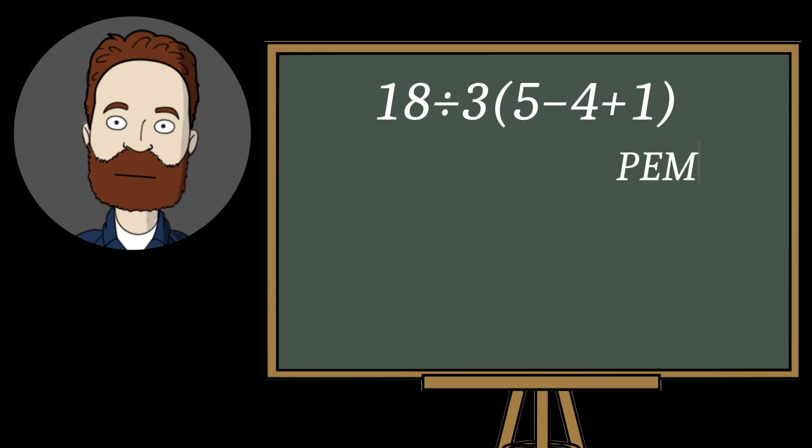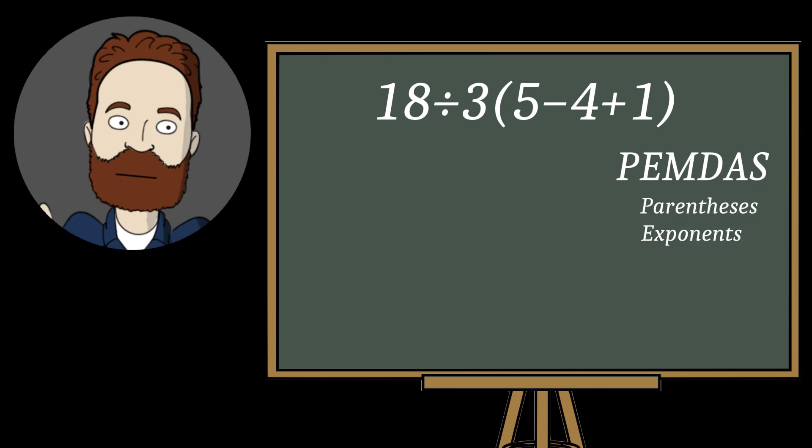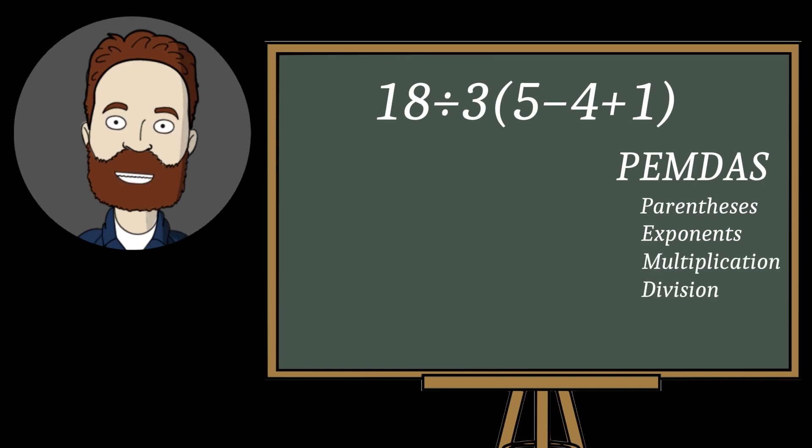The rule is, first everything inside parentheses. Then exponents. After that, multiplication and division. And finally, addition and subtraction.